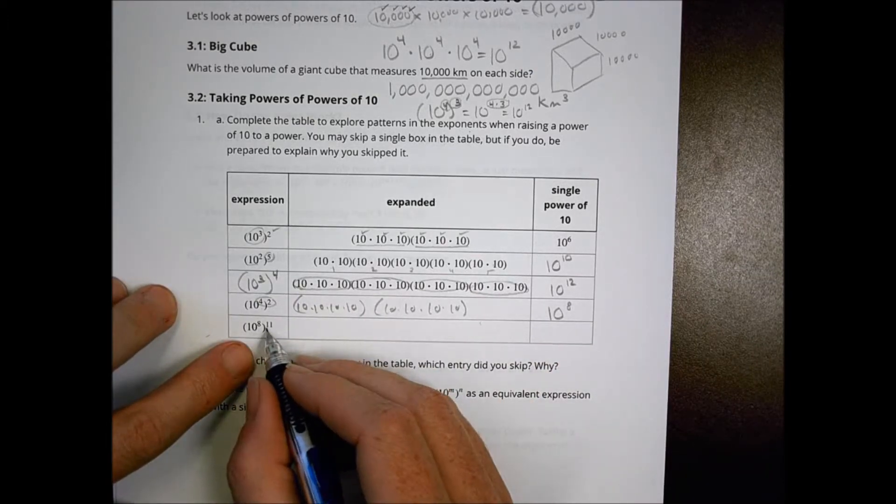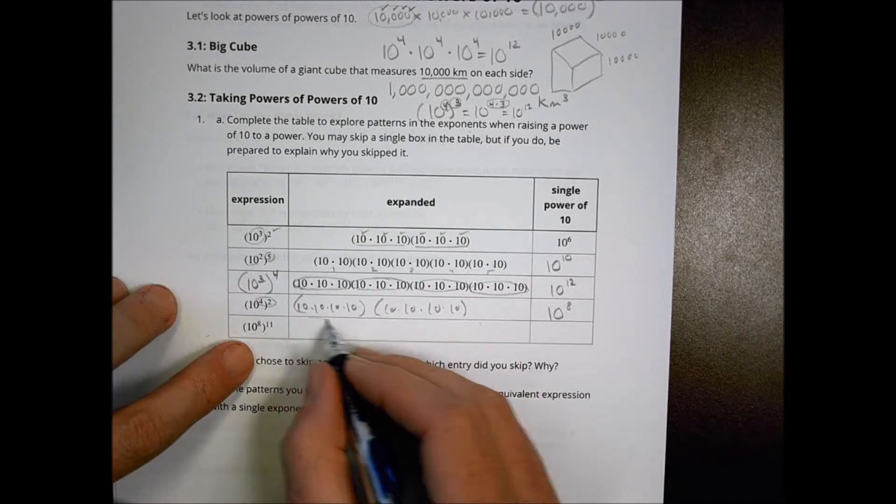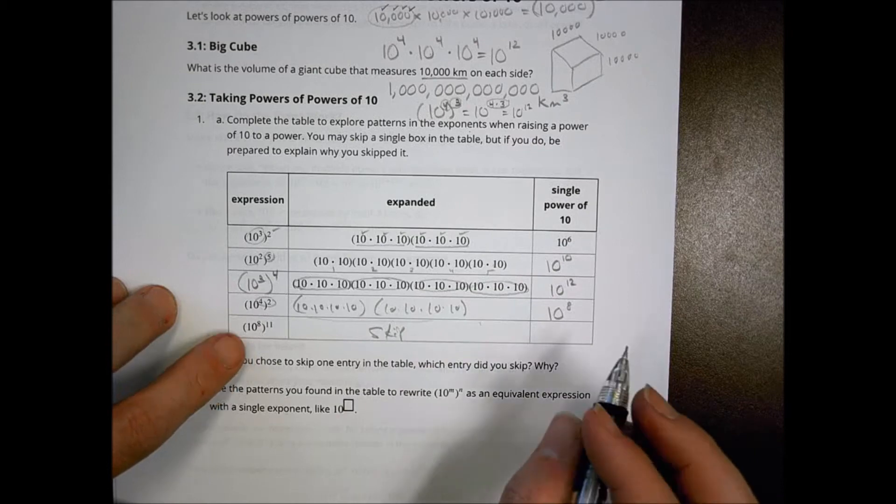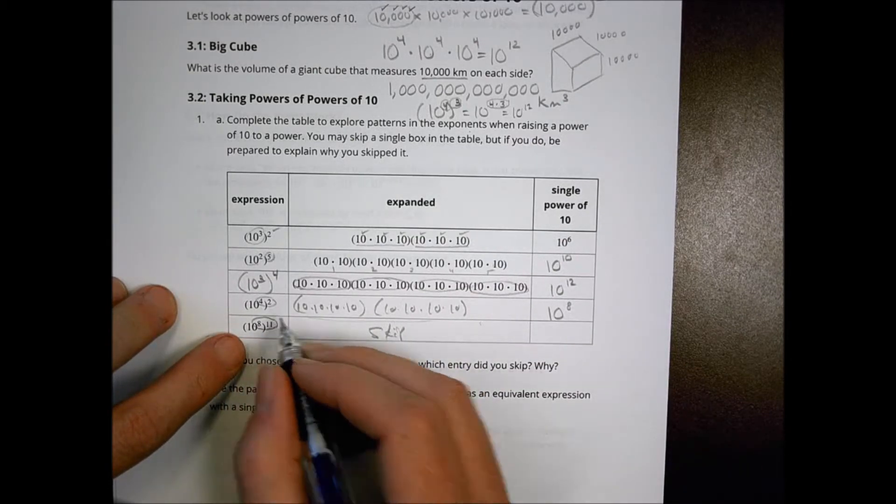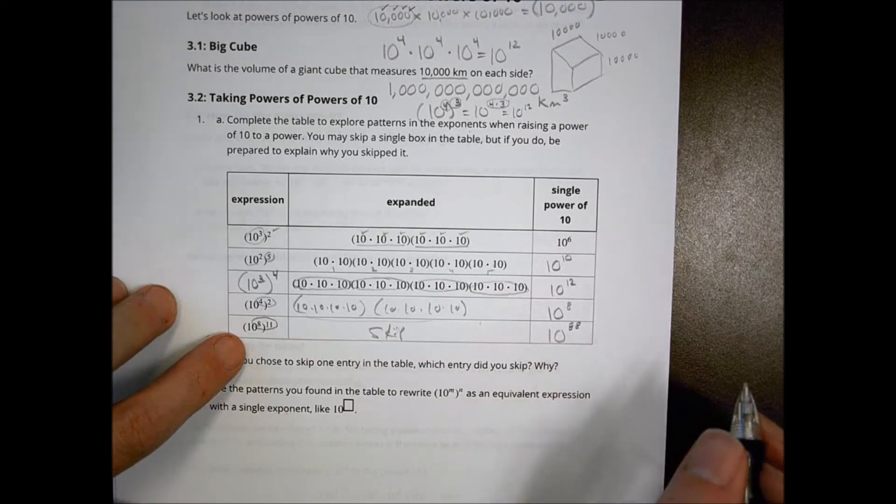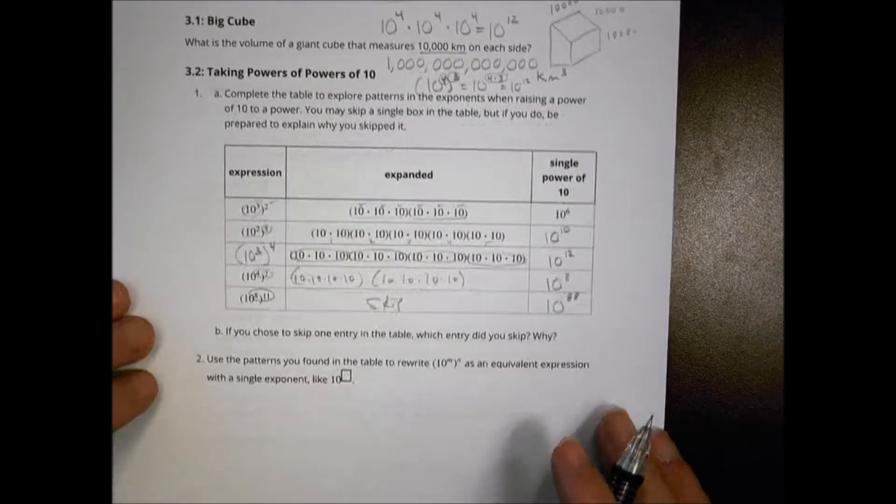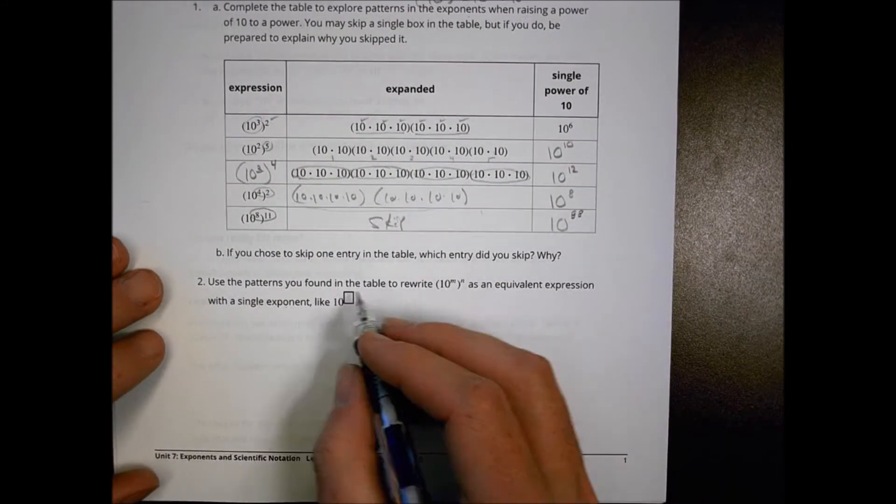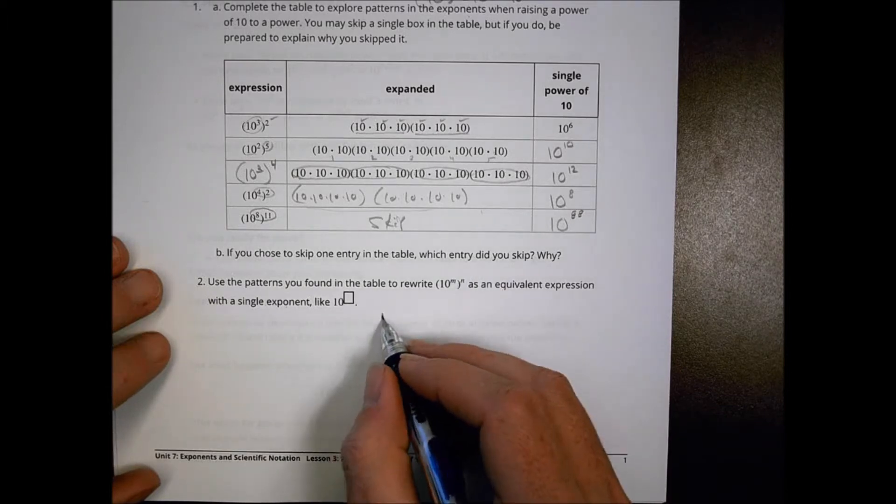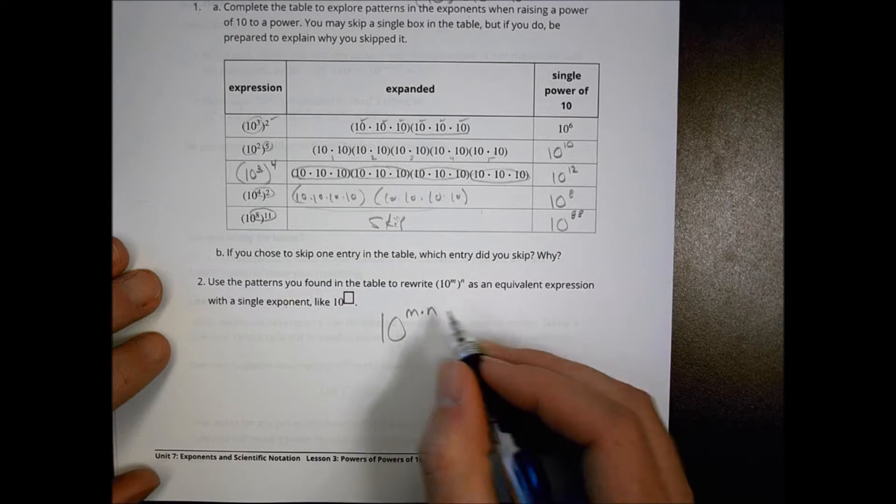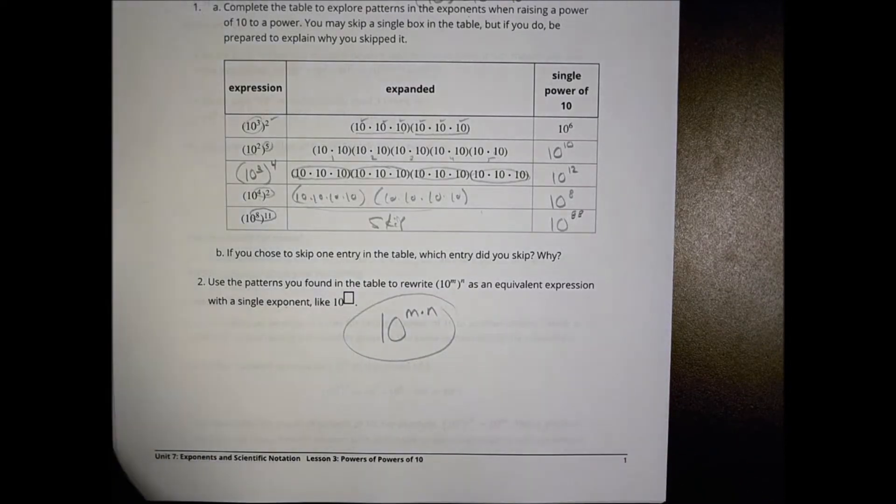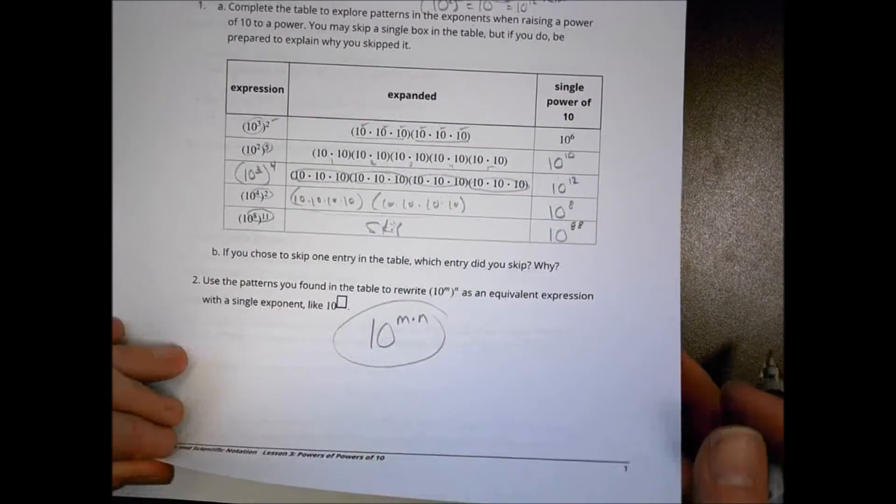Here, I have a group of 10 to the eighth. All of that is 10 to the eighth power and 11 of those. I'm not going to write that out because it's too many to write out. But I can do an exponential form. This becomes 10 to the 8 times 11 is 88 power. So based on this pattern, 10 to the m to the nth power can then become 10 to the m times n.